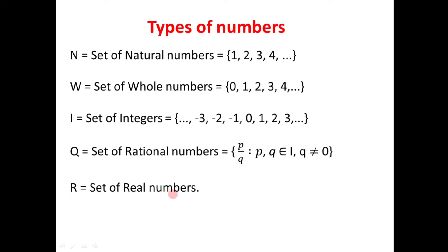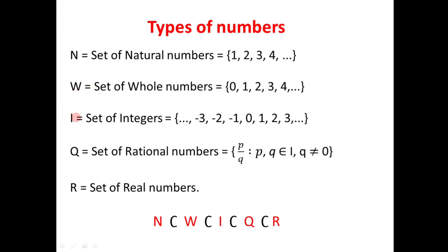And the next is the set of real numbers. Today we are going to learn real numbers in detail. Any natural number is a whole number because if 0 is added to natural numbers we get whole numbers. Similarly, all the whole numbers are integers because integers contain 0 along with all the positive numbers. So we have the relation that N is a subset of W — the set of natural numbers is a subset of the set of whole numbers. Similarly, the set of whole numbers is a subset of the set of integers, the set of integers is a subset of the set of rational numbers, and the rational numbers are a subset of real numbers.